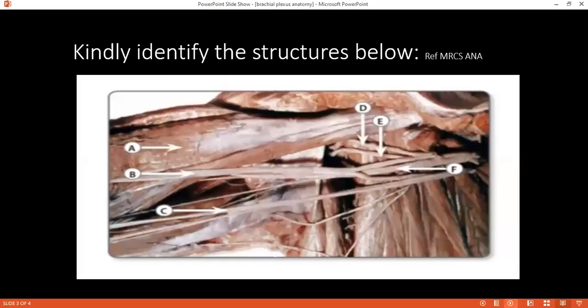Please identify the structures labeled A to F. Can you identify structure A? First, can you tell me what kind of image you are looking at? This is the image of brachial plexus and muscles.